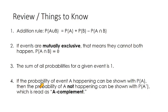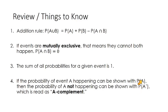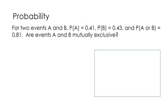In the previous video, I referenced the complement. If the probability of event A happening can be shown with P(A), then the probability of A not happening can be shown with the probability of A prime — we call that A prime, which reads as A complement. So, probability of A happening, probability of not A happening. If this is 20%, this is 80%. If this is 67%, this is 33%. We want you to have these ideas in your pocket as we go through these videos.